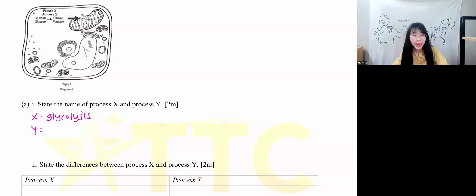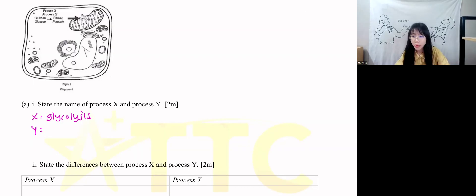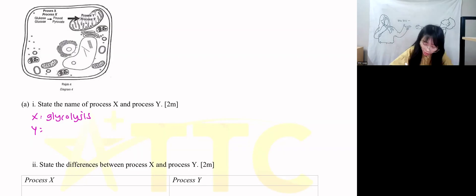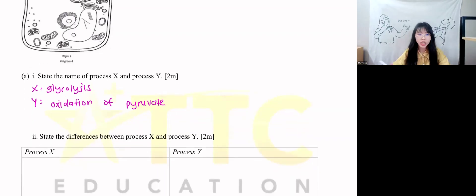Process Y happens in the mitochondria. As long as it happens in the mitochondria, it means you need to have oxygen. This is what we call the oxidation of pyruvate.